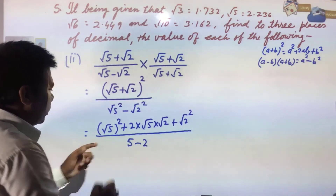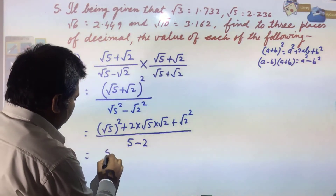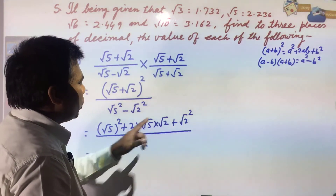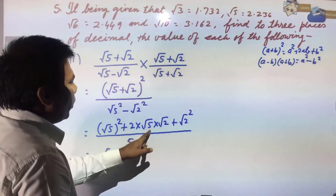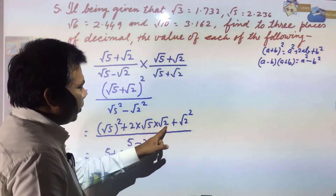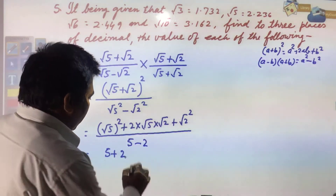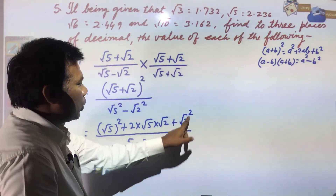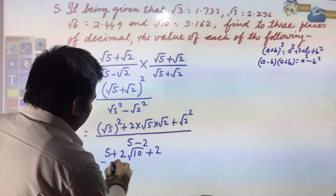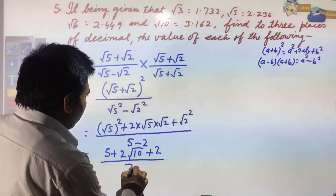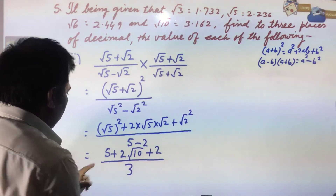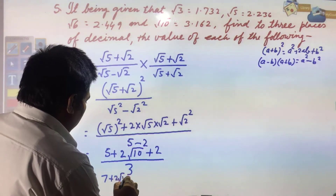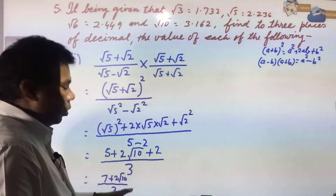So the numerator becomes 5 + 2√10 + 2, and the denominator is 3. This simplifies to (7 + 2√10) / 3.